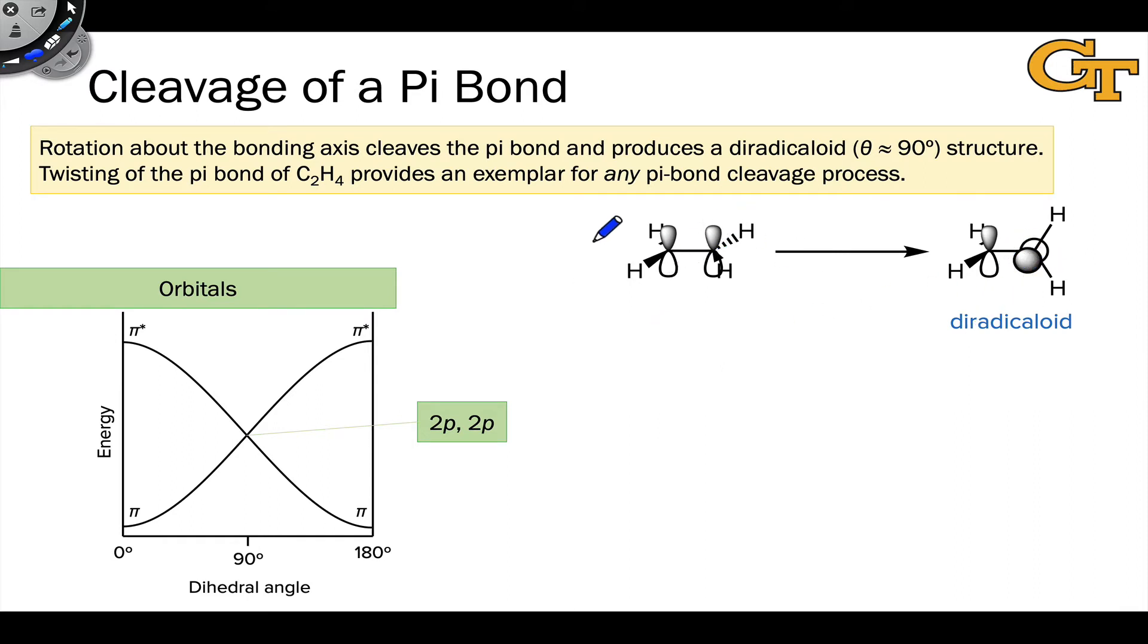The idea is that rotation essentially creates a diradicaloid structure from ground state ethylene. With the two electrons in these p orbitals at right angles, they're interacting much less. As this rotation happens, we are generating diradicaloid character by decreasing the extent of pi bonding between the electrons.